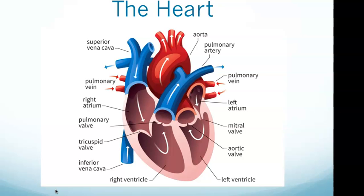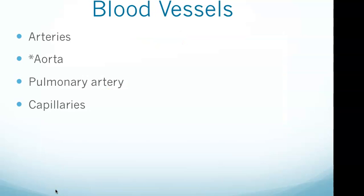Now let's look at blood vessels. Blood outside the heart travels through blood vessels. The three major types are arteries, capillaries, and veins. Arteries are strong and elastic and prepared for the high pressure of blood as it leaves the heart.